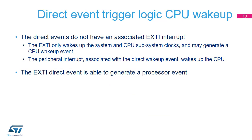A direct event is able to generate a CPU event and trigger a system wake-up through the EXTI controller. The active edge of direct events is the rising edge. Direct events do not rely on the EXTI controller to assert interrupt requests because they have their dedicated lines to the NVIC. Otherwise, the same circuit as the one described in the previous slides is implemented. Direct events can be independently masked for event generation and interrupt generation. The interrupt mask is only used as a wake-up mask.